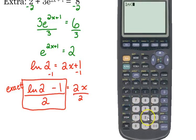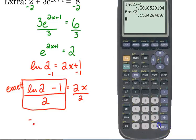But then the decimal approximation, natural log of 2, close the parentheses after the 2, then subtract 1, and then divide that entire thing by 2. So here is the approximate answer. Negative 0.1534 is our approximate answer for x.